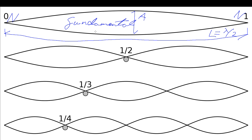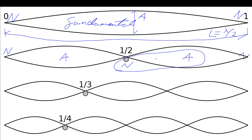We can get higher patterns. If we increase the frequency, we get a second pattern where instead of just a node at each end and a single anti-node, we've got a node at each end, a node in the center, and a pair of anti-nodes — so node, anti-node, node, anti-node, node. We've added a node/anti-node pair. This is one of the harmonics of the fundamental. The fundamental mode can also be referred to as the first harmonic, this would be the second harmonic, and the next the third harmonic, and so on.